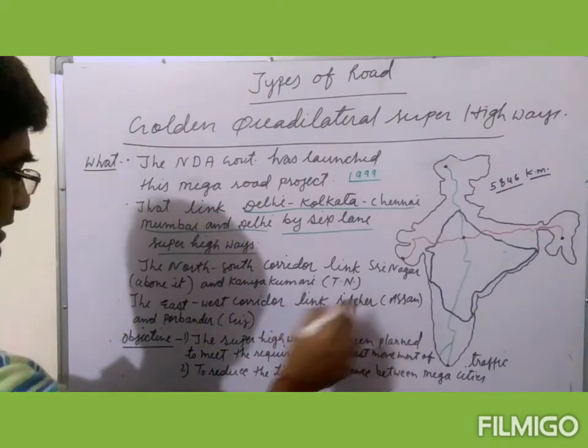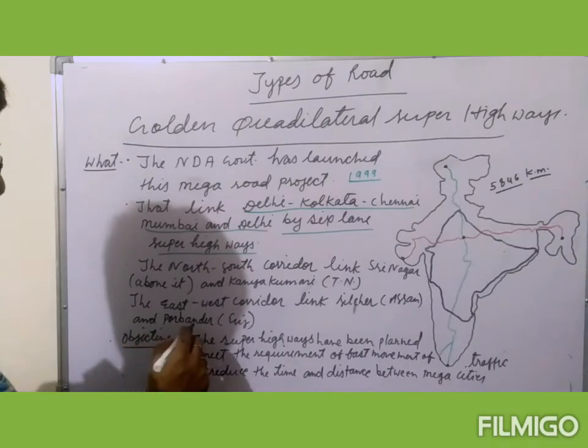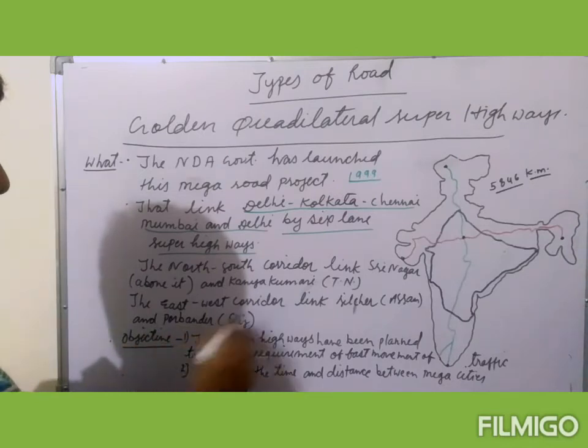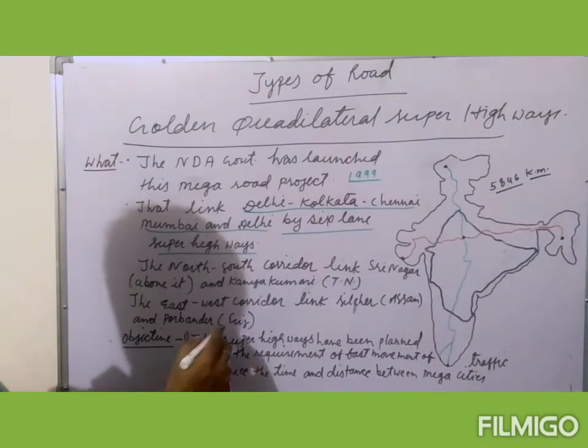And the East-West corridor links Silchar, which is in Assam, and connects with Porbandar, which is in Gujarat.